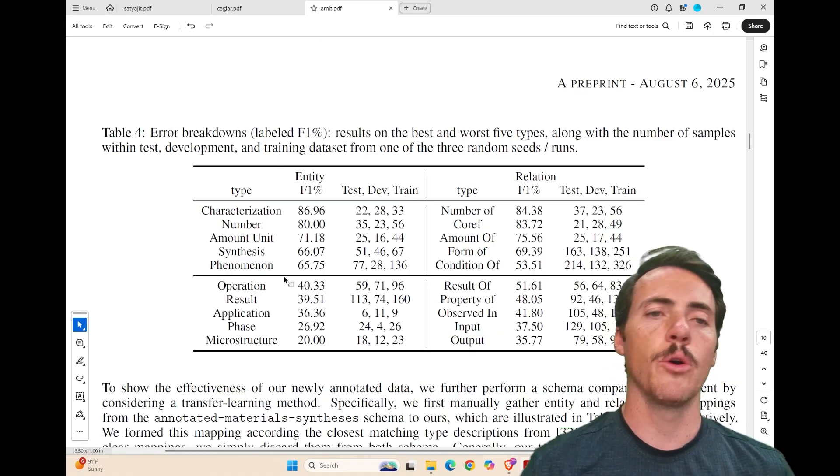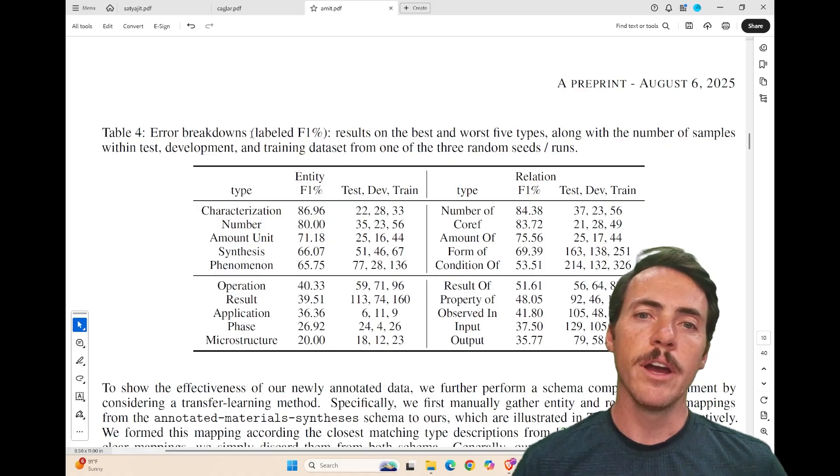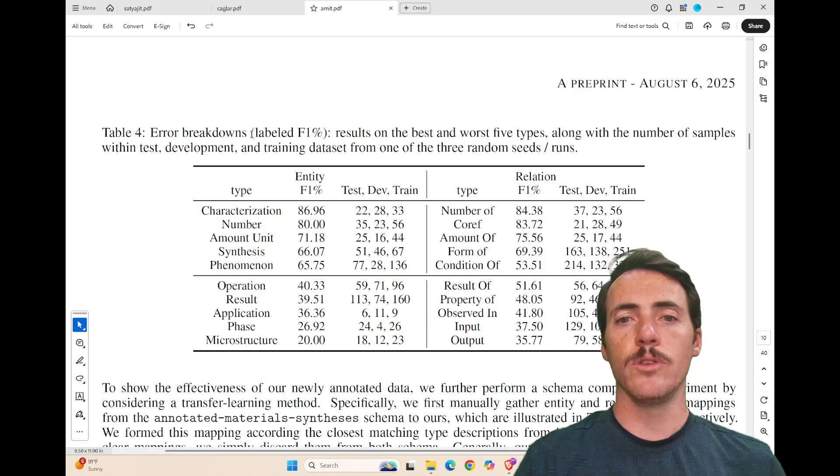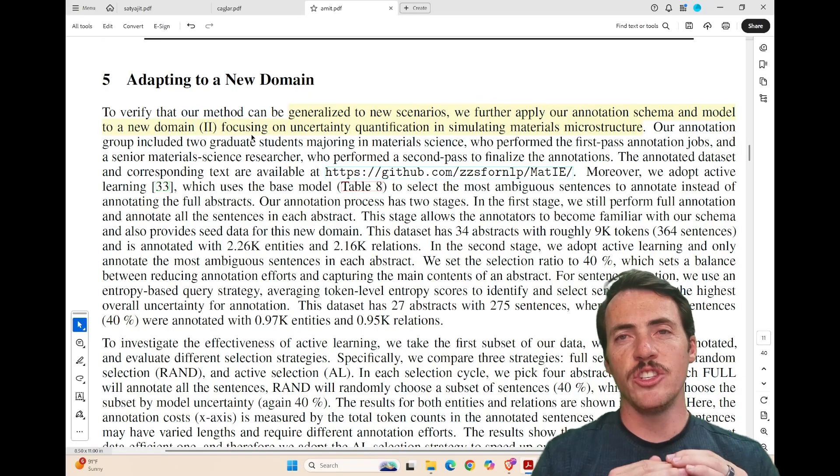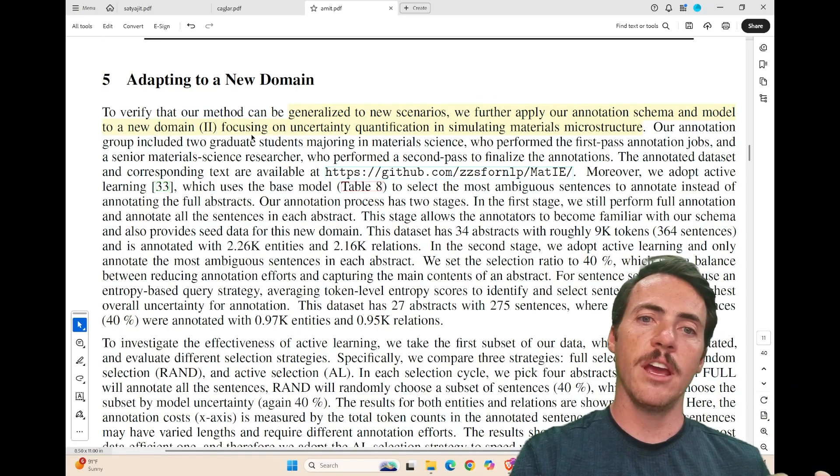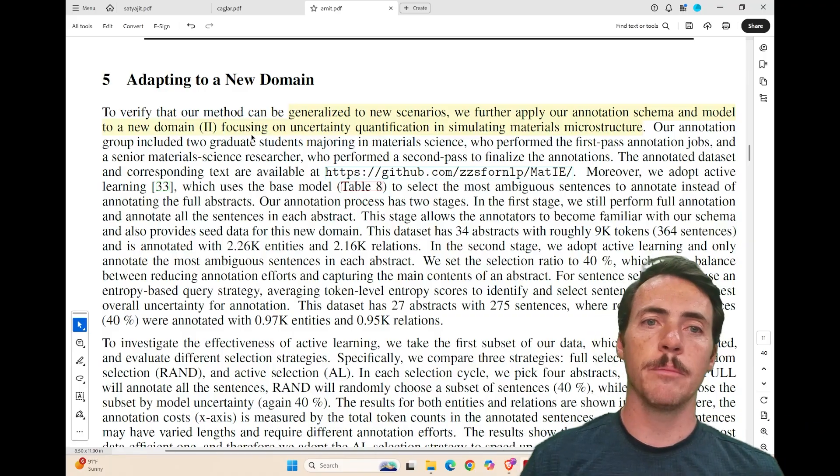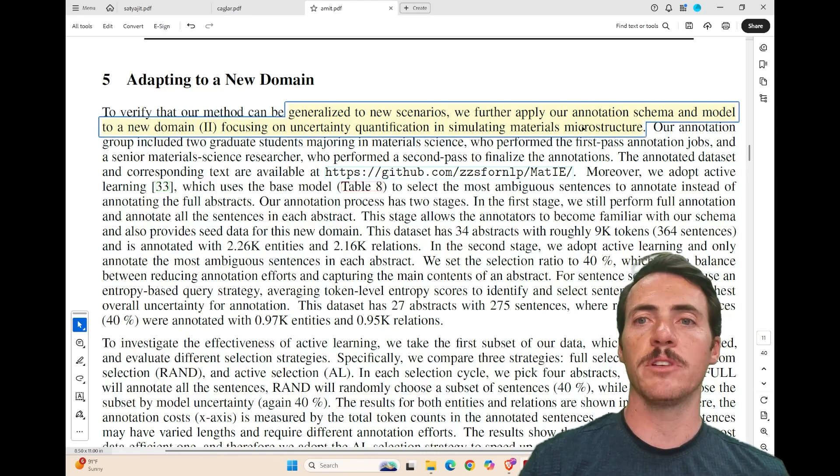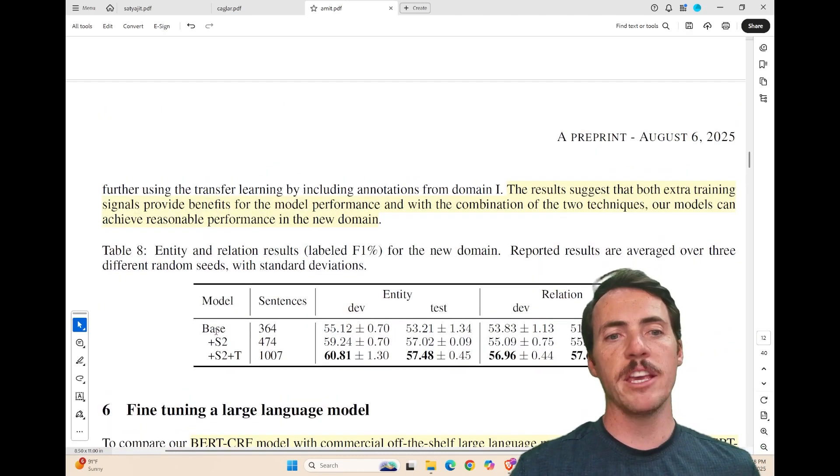And ultimately, they go about testing this, and they're showing you the actual error. They're cataloging it using the F1 score for different variations of using these different types of schemas. Since a key part of this paper is a general use schema, they want to do their labeling in one domain and then actually try it in a different domain. So they go ahead and do that in these high temperature materials, focusing on uncertainty quantification for these materials microstructures.